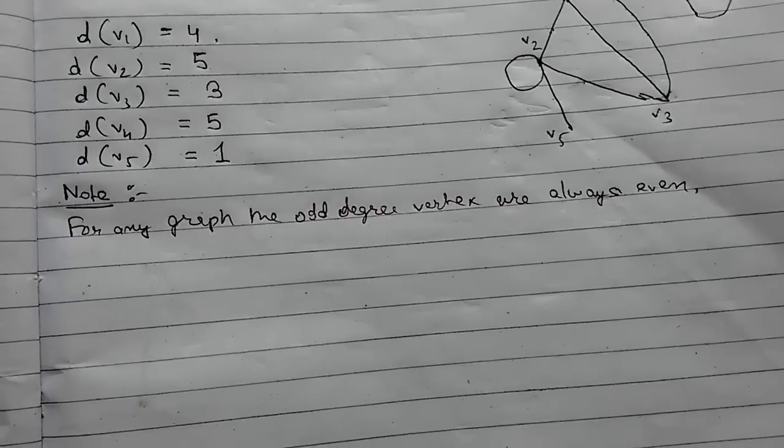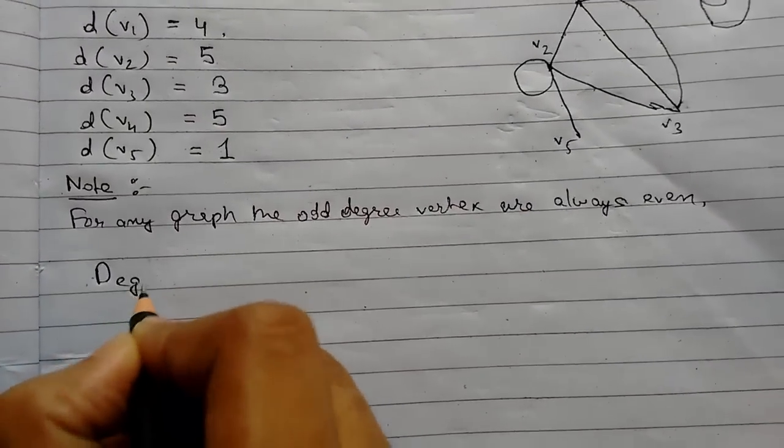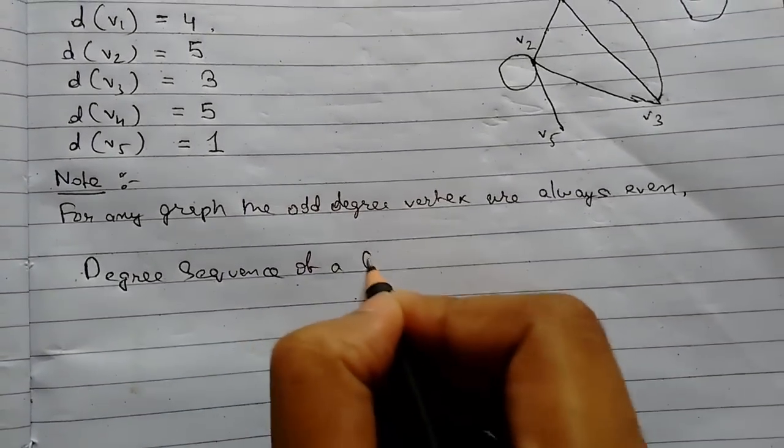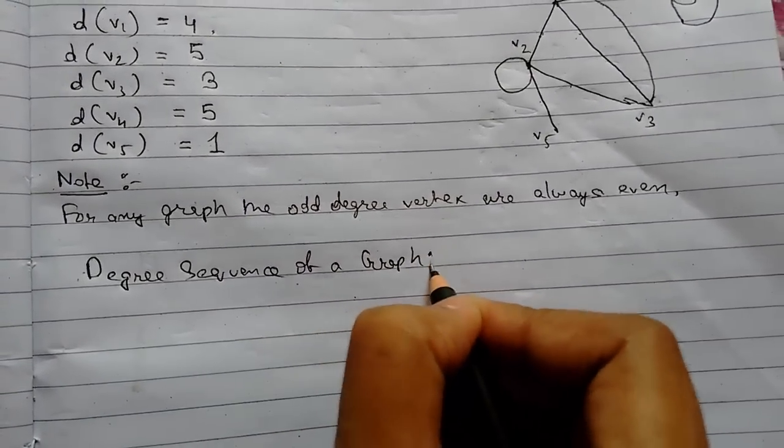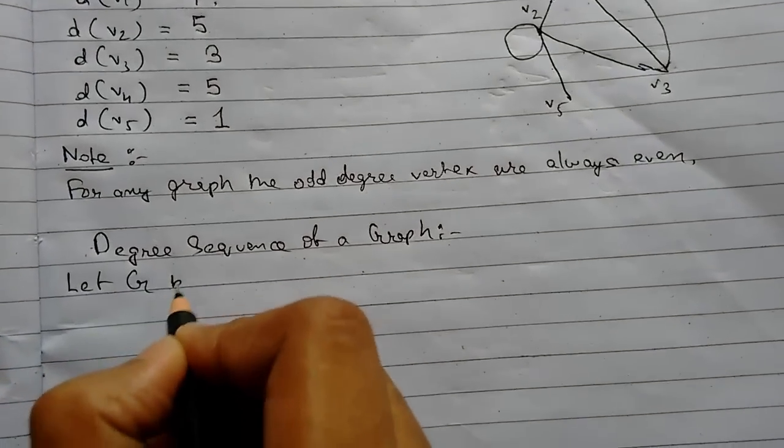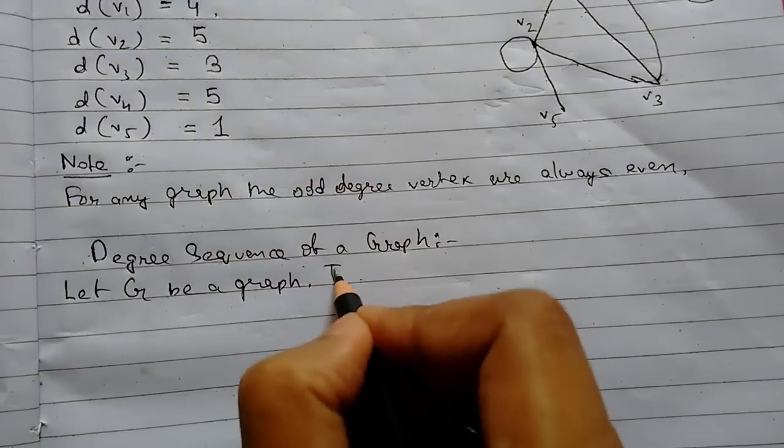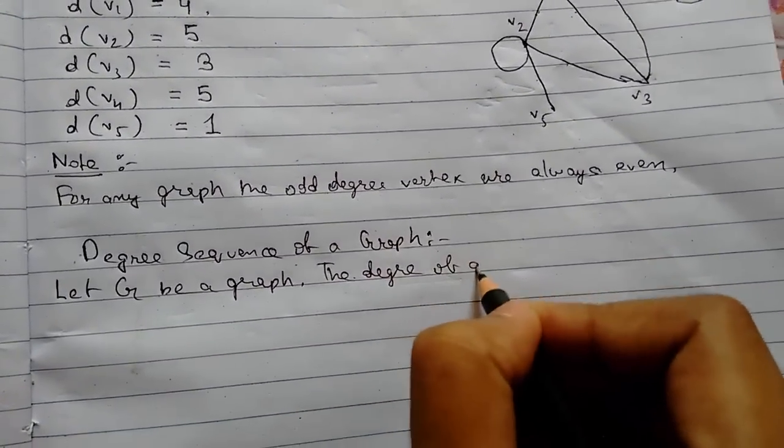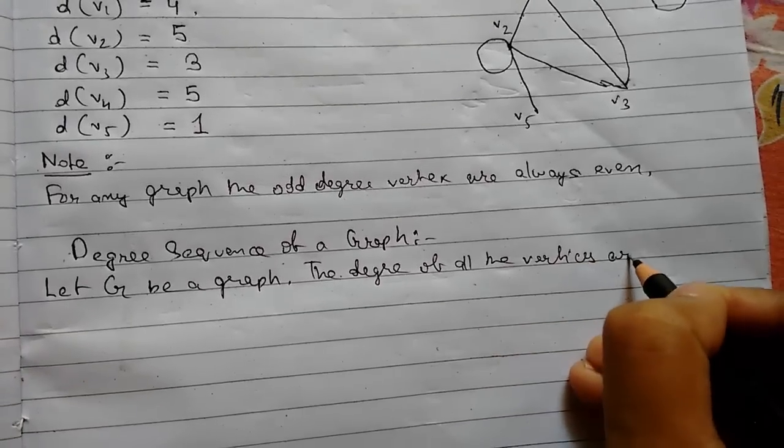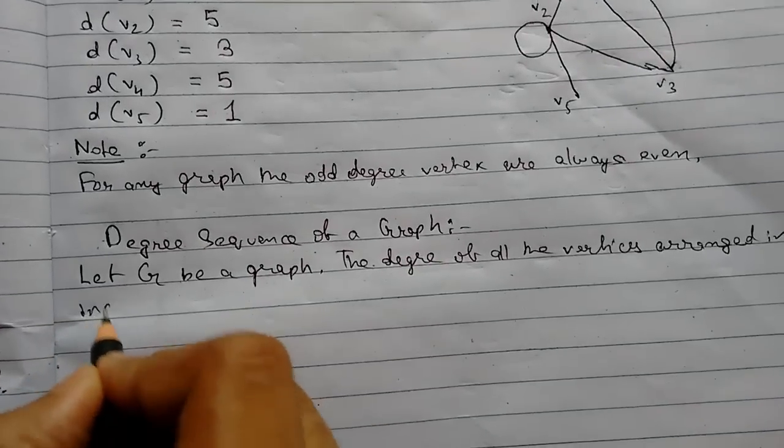So now let us now look at some more definition about degree. So degree sequence of a graph. Let me write it. Let G be a graph. The degree of all the vertices arranged in increasing order is called degree sequence of the graph.